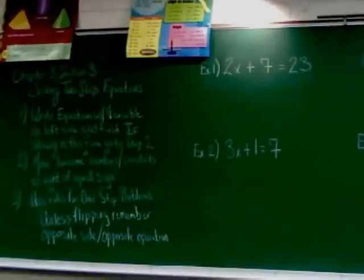Step 2: Move the lonesome numbers, or what we would call constants, to the right of the equal sign. Step 3: Use the rules for one-step problems. And unless you're flipping, meaning you're going to take the whole left side and the whole right side and flip them, any time you've got to go to the opposite side, you use the opposite operation.